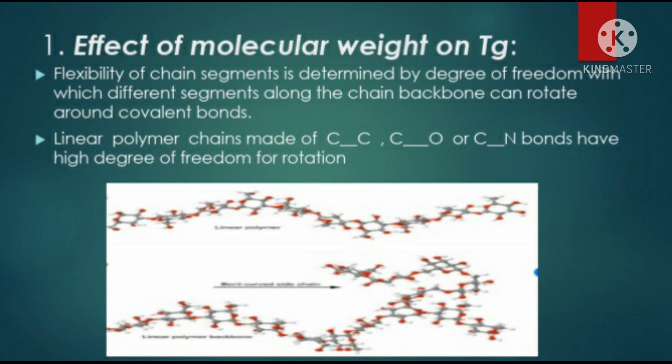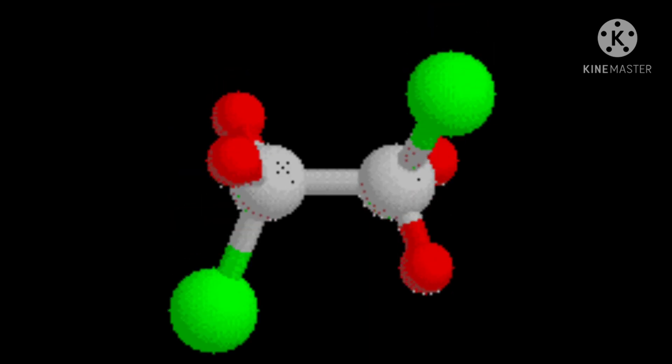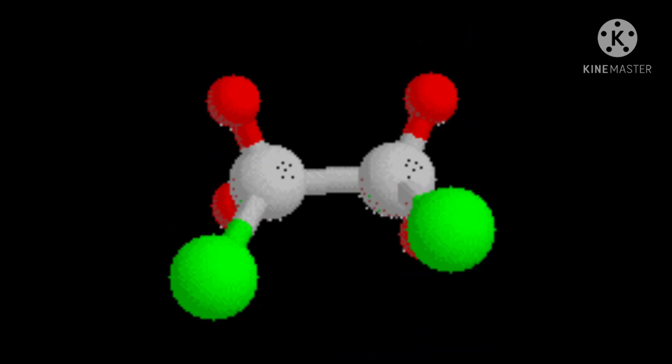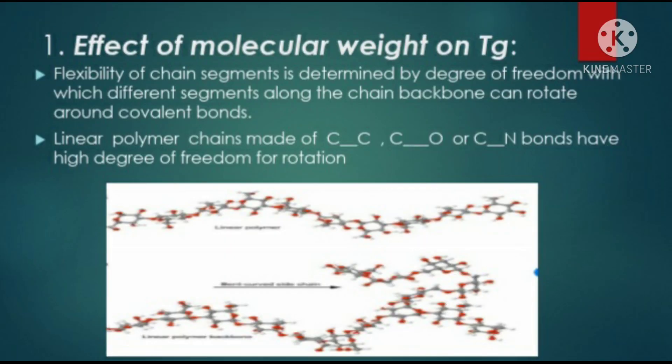We will study the effect of molecular weight. Flexibility of a chain segment is determined by the degree of freedom with which different segments along the chain backbone can rotate around covalent bonds. Linear chain polymers made up of carbon-carbon, carbon-oxygen, and carbon-nitrogen bonds have a high degree of freedom for rotation, because the linear polymer chain can easily rotate around covalent bonds as it doesn't have any bulky group or double bond attached.